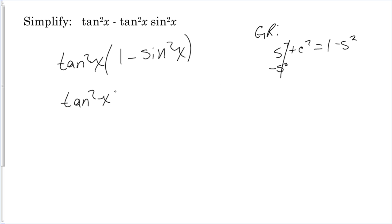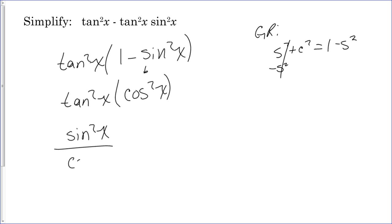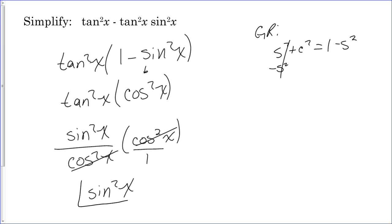So tangent squared x times cosine squared x is our next step, because one minus sine squared converts to cosine squared. Now let's convert to sines and cosines: tangent squared is sine squared x over cosine squared x, times cosine squared x. The cosine squared cancels, leaving us with just sine squared of x as our final answer.